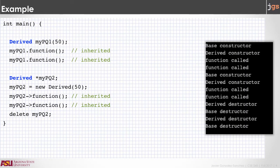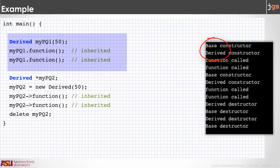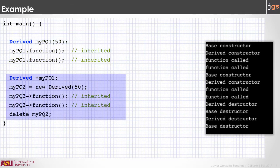We can use the derivative class to create objects, and we can also create pointers. When we create a new object, as you can see in the output, the base constructor is called first, and then the derivative constructor body is executed. We can call the function using the object from the derivative class, because the function, even though it was a member of the base class, is inherited in the derivative class. Using pointers, we need to use the keyword new. When you create the object with new, you are calling the constructor of the derivative class, but that constructor is going to call the constructor of the base class — and again, the first call goes to the constructor in the base class, then the body of the constructor in the derivative class is executed.